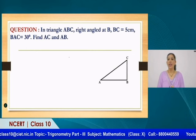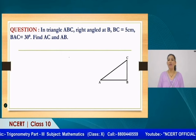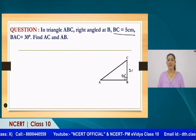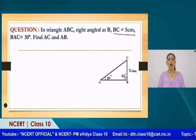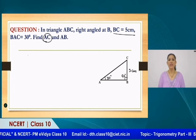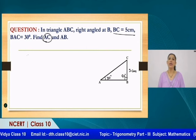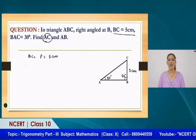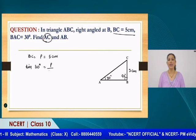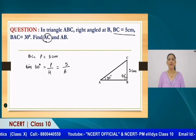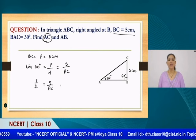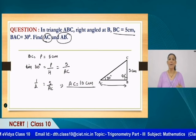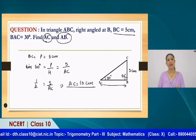Next question: In triangle ABC right-angled at point B, BC = 5 cm and angle BAC = 30°. Calculate the value of AC. Here, BC is the perpendicular = 5 cm. Using sin 30° = perpendicular/hypotenuse = 5/AC, and since sin 30° = 1/2, we get AC = 10 cm. Similarly, you can also use tan 30° or cos 30° to calculate the value of AB.